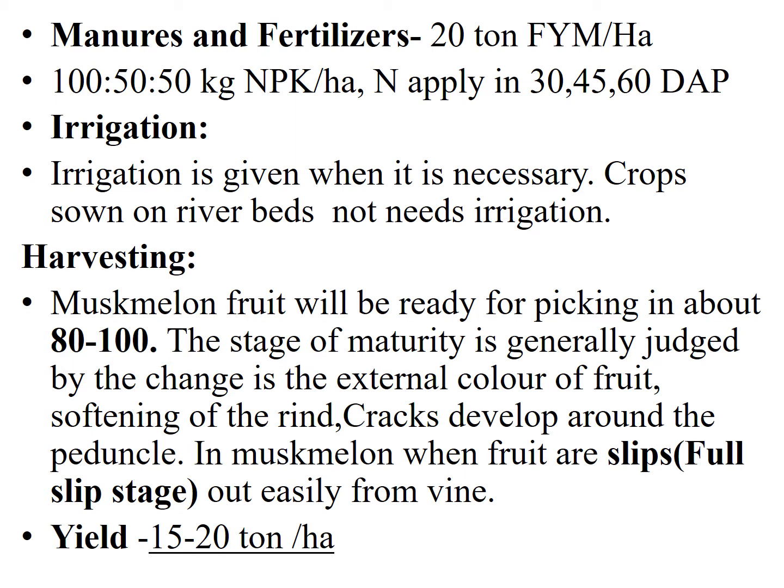Regarding harvesting, musk melon fruit will be ready for picking in about 80 to 100 days after planting. The stage of maturity is generally judged by changes in the external color of the fruits, softening of the rind, and cracking around the peduncle. There are two main stages: the half-slip stage and the full-slip stage.